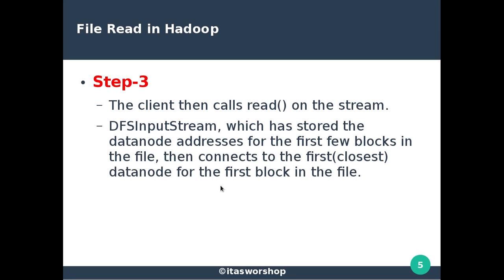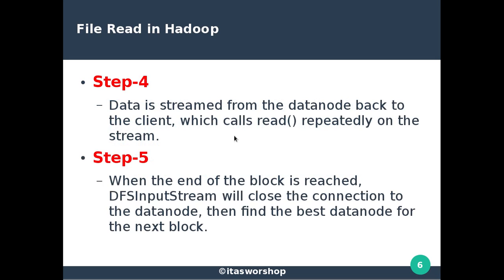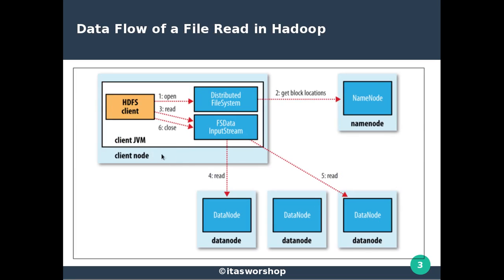In the fourth step, data is streamed from the DataNode back to the client, which calls read() repeatedly on the stream. In the fifth step, when the end of a block is reached, DFSInputStream closes the connection to that DataNode, then finds the best DataNode for the next block. FSDataInputStream contacts the DataNode and performs the read operation for the next few blocks in a cycle, continuing until it reaches the end of the stream.